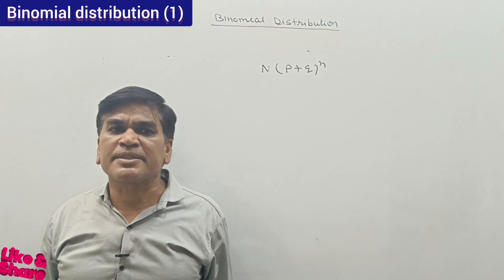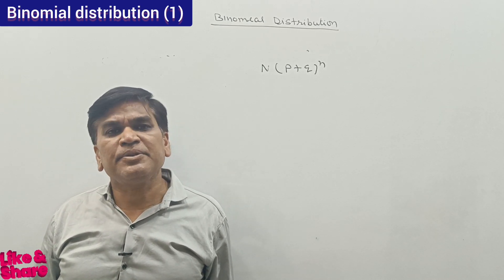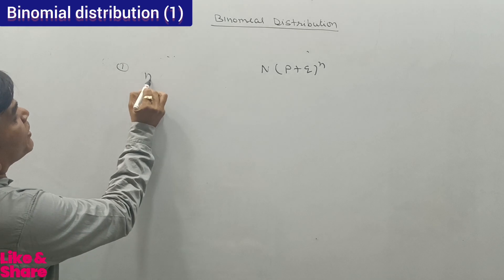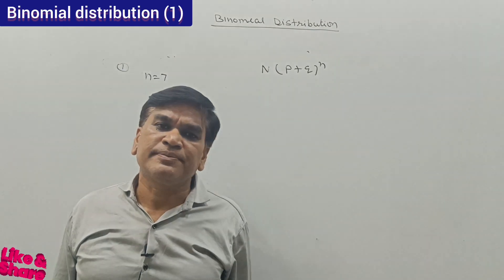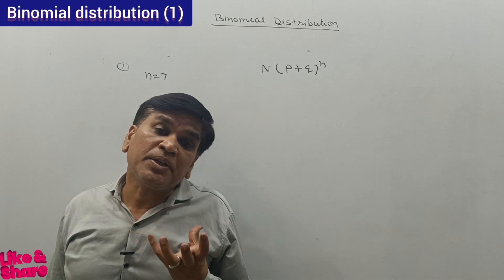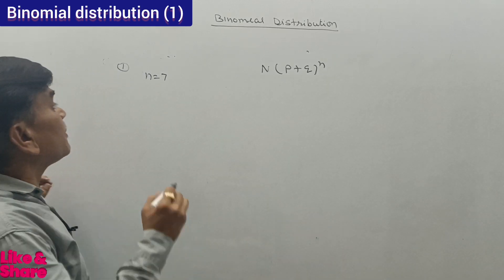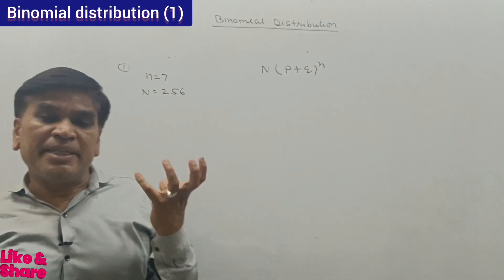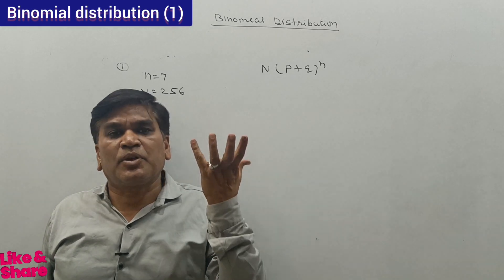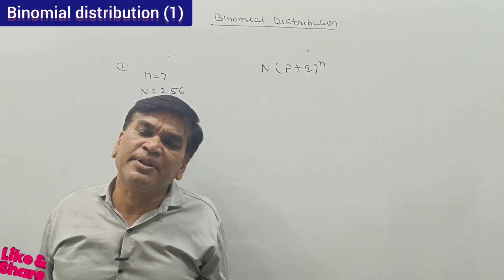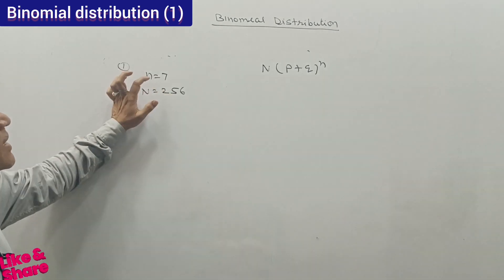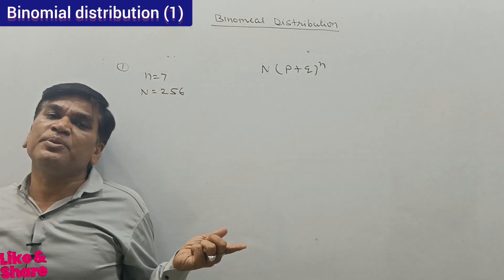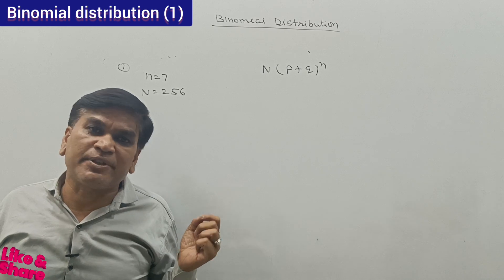In today's video, we will discuss some questions related to the binomial distribution. The very first question: a person takes seven coins and tosses them simultaneously, repeating this 256 times. We are to calculate the probability and expected frequency for that.